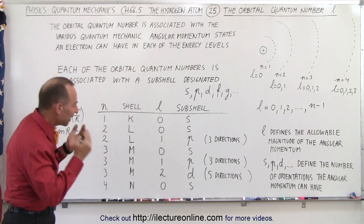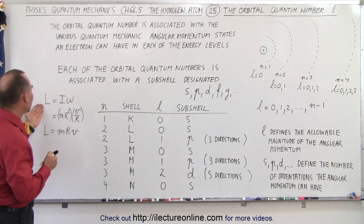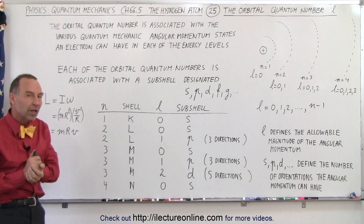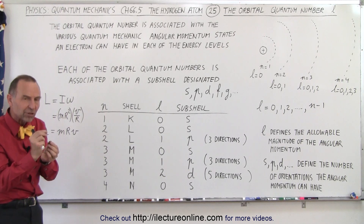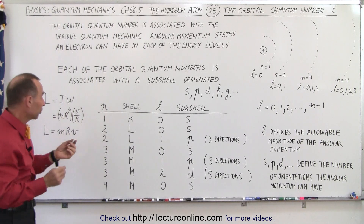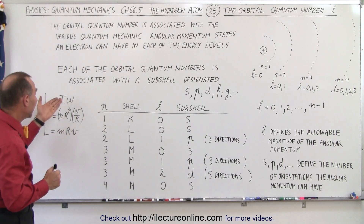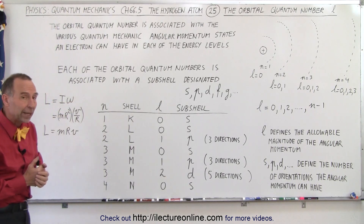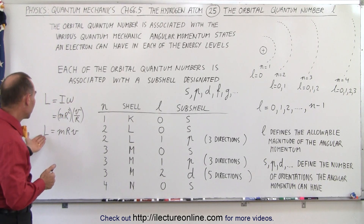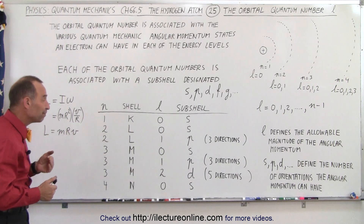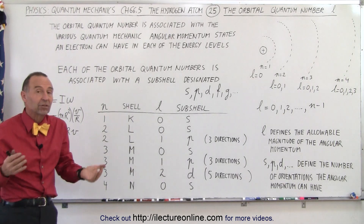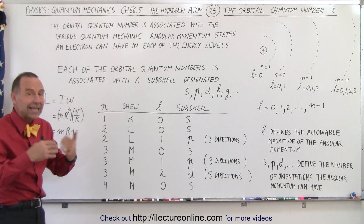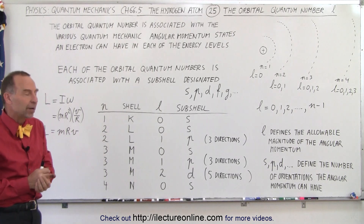In classical mechanics, the angular momentum is defined as the moment of inertia times the angular velocity. For a point object, the moment of inertia is equal to mr squared, and the angular velocity is the velocity divided by the radius. Simplified, the angular momentum is mrv, and in classical mechanics, r and v can have any value possible.